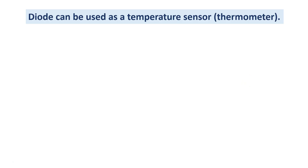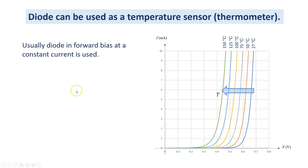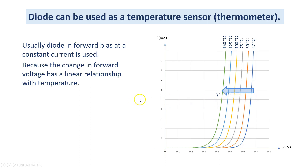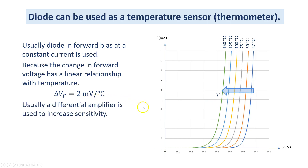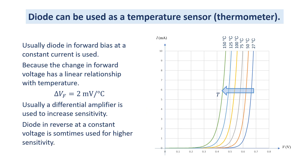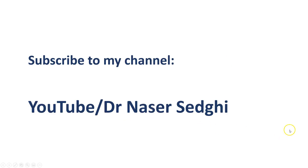Because of the change in its characteristics, a diode can be used as a temperature sensor or as a thermometer. Usually a diode in forward bias at a constant current is used, because the change in forward voltage has a linear relationship with temperature — for a silicon diode it is 2 millivolts per degree Celsius. Usually a differential amplifier is used to increase the sensitivity of the circuit. A diode in reverse bias at a constant voltage is sometimes used if a higher sensitivity is needed.